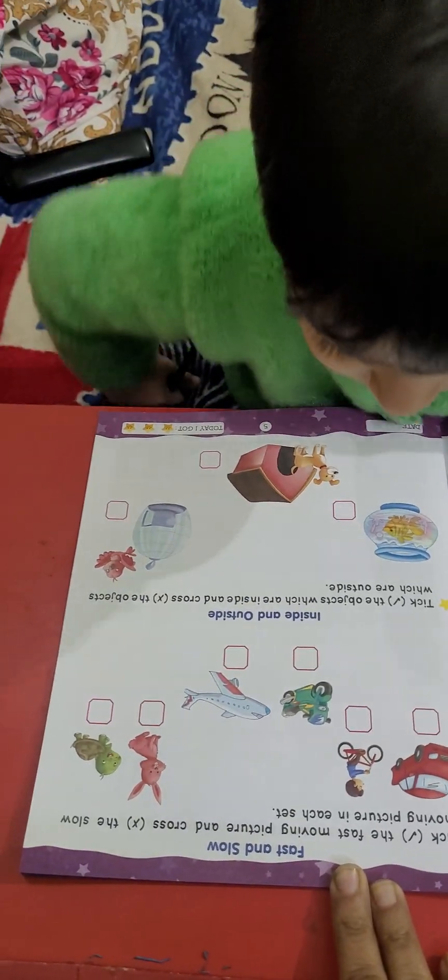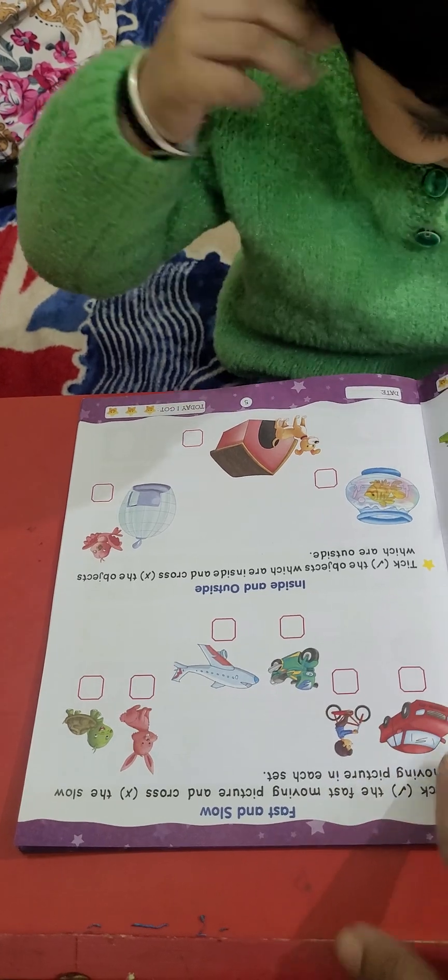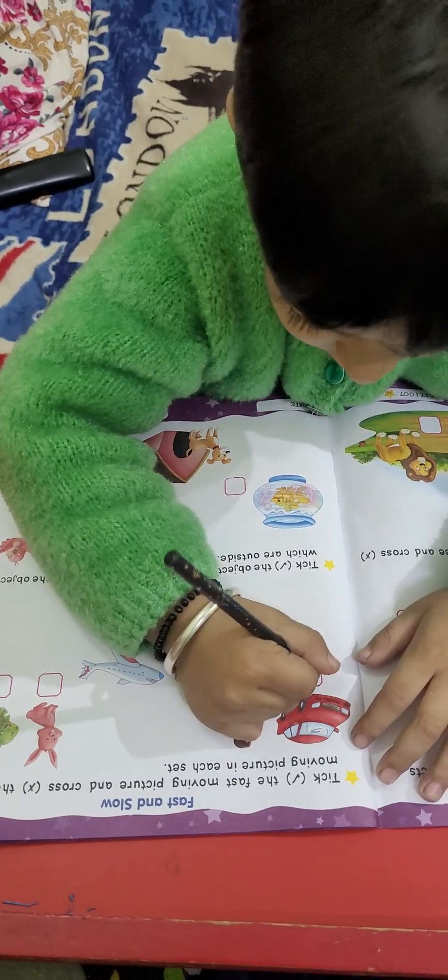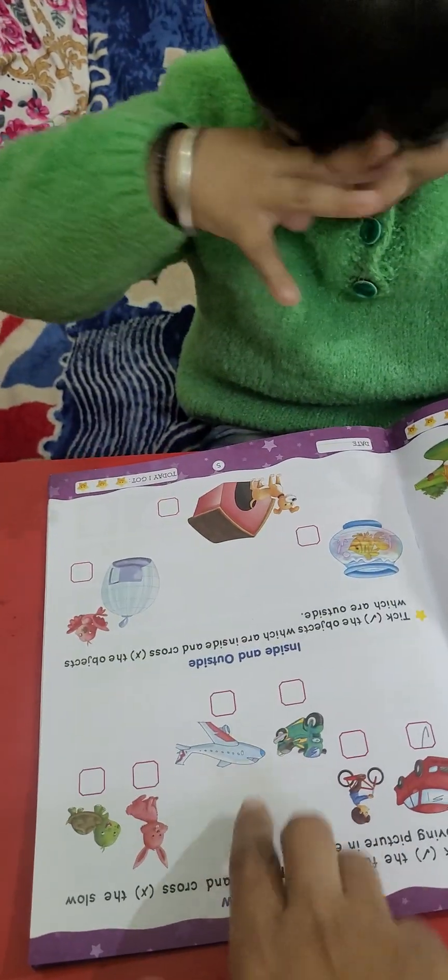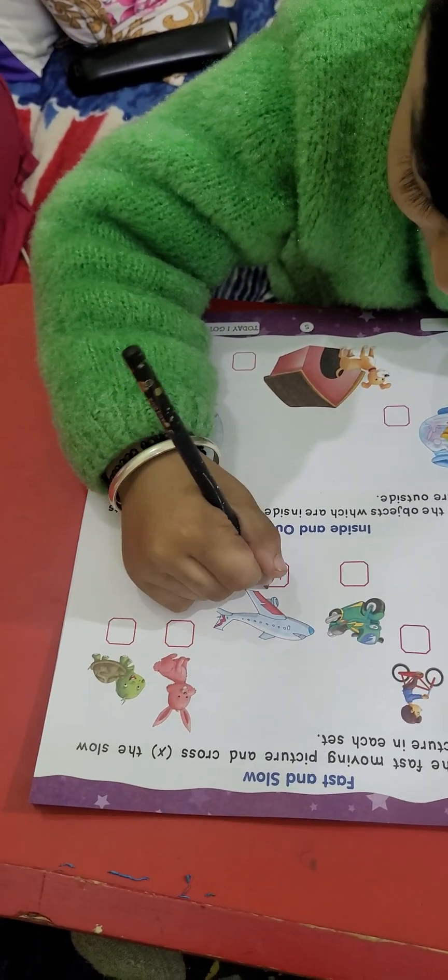Let's come on the next activity. Fast or slow? So, in this, which will move fast? Car or a bicycle? Car. Okay. Then tick it. Check it here. In these two? Good. These two?